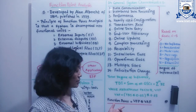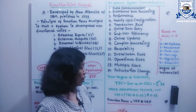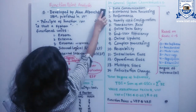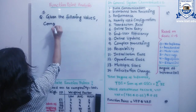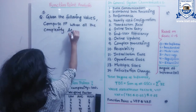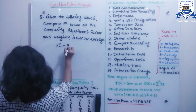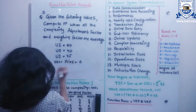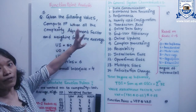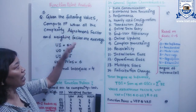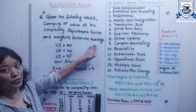Now I will calculate the function point through a numerical example. The question states: given the following values, compute the function point when the complexity adjustment factors and weighing factors are all average. The given values are: user input (external input) = 50, user output (external output) = 40, user inquiries (external inquiries) = 35, user files (internal logical files, ILF) = 6, and external interface files (EIF) = 4.